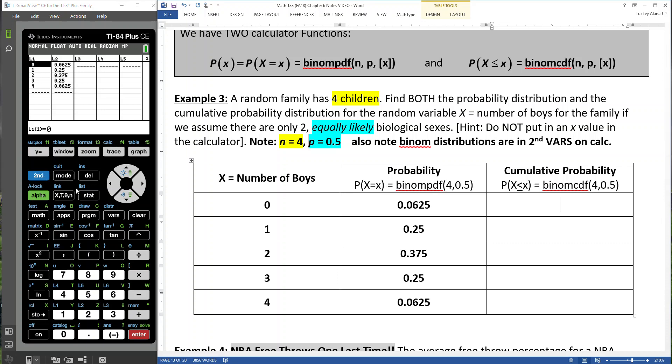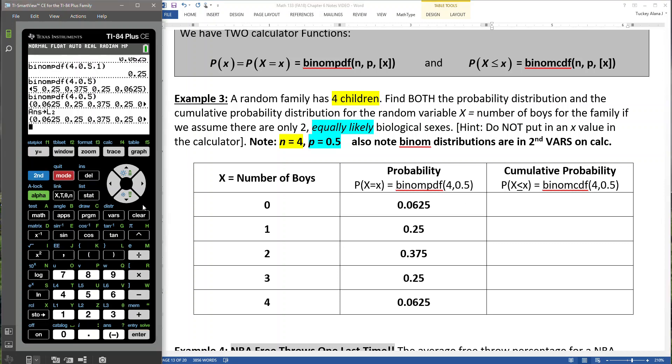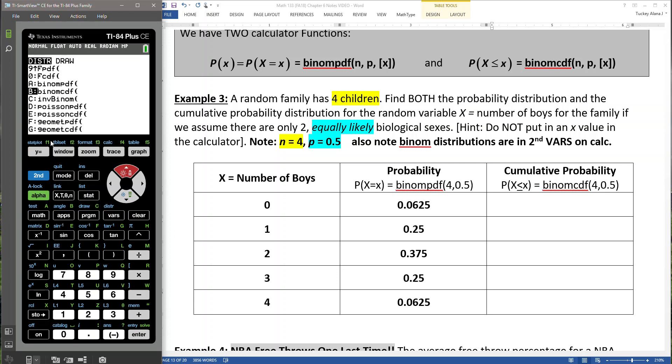Let me quit first of all and get out of there. Clear all this out. So I'm going to go to second distribution, and binom CDF is right below PDF. CDF stands for gathering, adding, cumulative. So I'm going to take binom CDF, letter B.